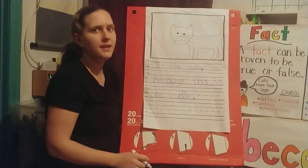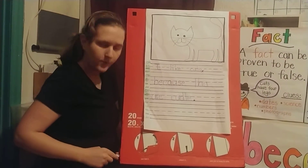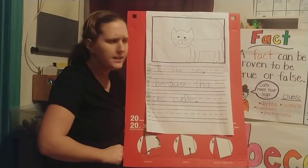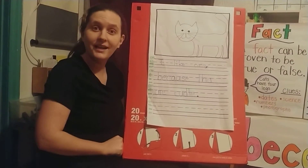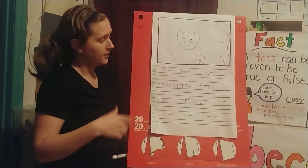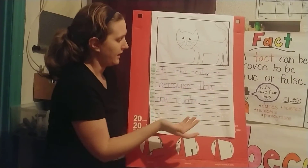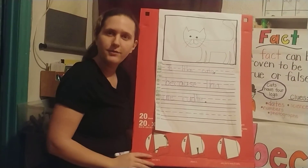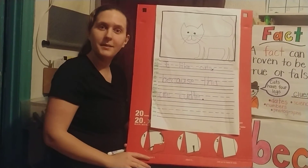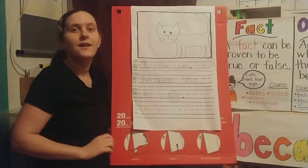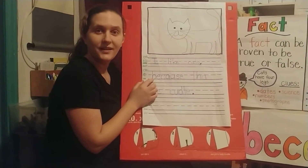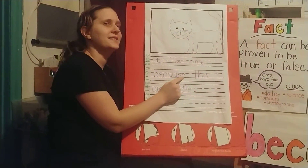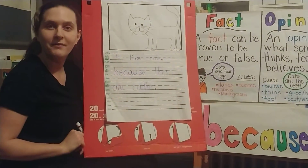Now what if I didn't like cats? What if when I was little a cat scratched my arm and then I didn't like cats from then on? That could be a reason why I don't like cats. I could have written: I do not like cats because a cat scratched me. And that would be a perfectly fine reason for writing about not liking cats. Because is how we show our reasons.